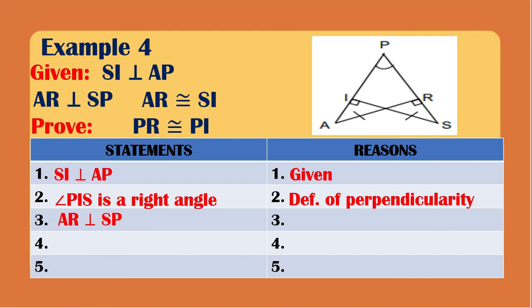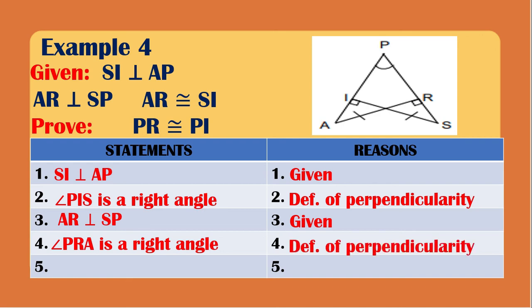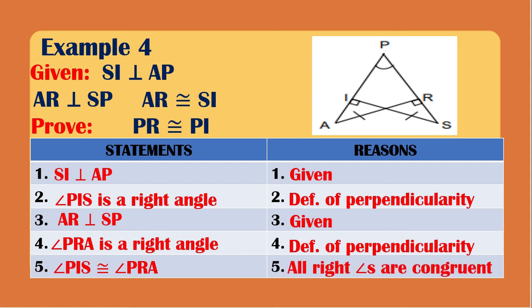For the third statement, AR is perpendicular to SP, reason is given. Since they are perpendicular, the right angle created is angle PRA, reason is definition of perpendicularity. Since we now have two right angles, we can say that angle PIS is congruent to angle PRA, because all right angles are congruent.